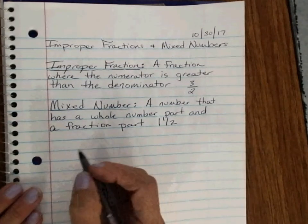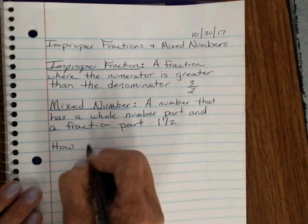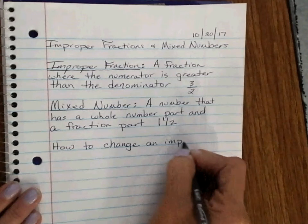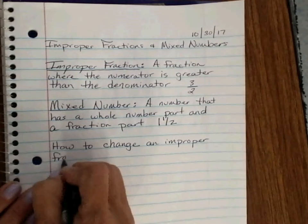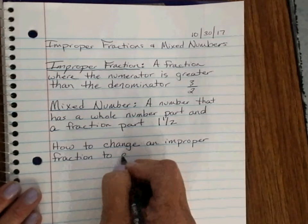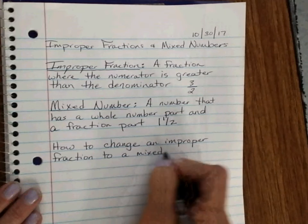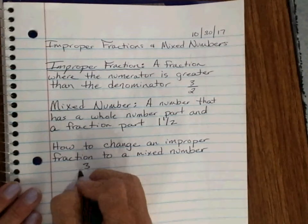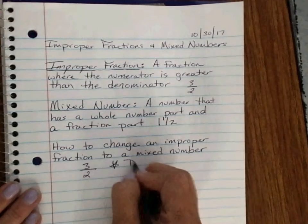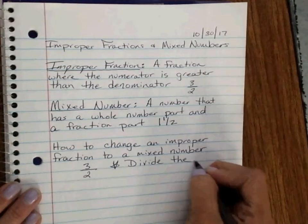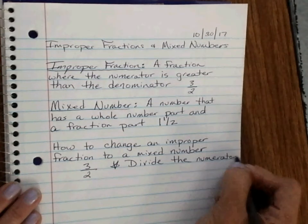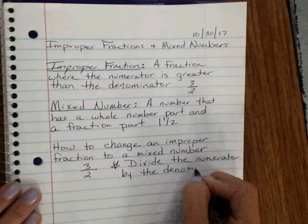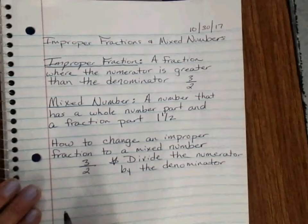Now, sometimes we want to change our improper fractions into mixed numbers. So, we've got 3 over 2. Our rule is we're going to divide the numerator by the denominator.